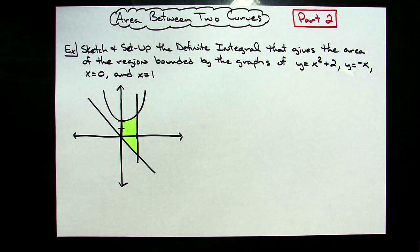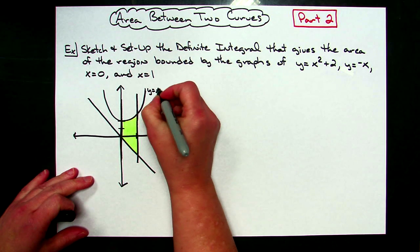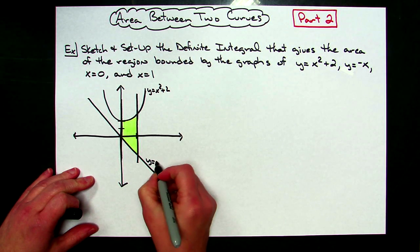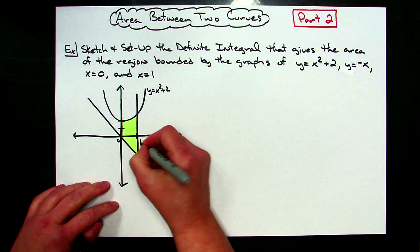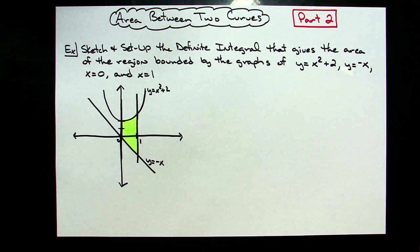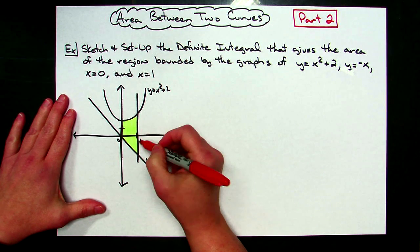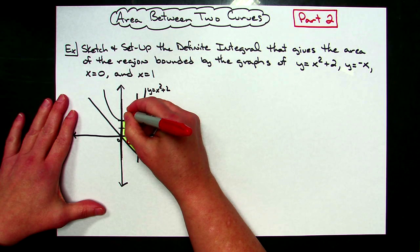Now let's go ahead and identify some of those curves. This parabola is y equals x squared plus two, this line is y equals negative x, and I'm going through x equals zero and x equals one. I'm going to put a representative rectangle on there. Everything is in terms of x, and I have two x values from zero to one, so I'm going to use a vertical representative rectangle with width delta x.